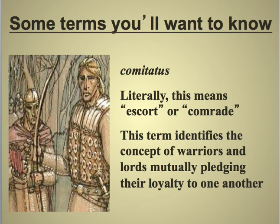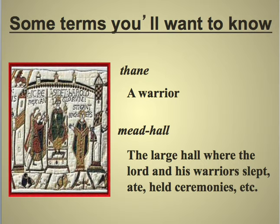Comitatus literally means escort or comrade. This term identifies the concept of warriors and lords mutually pledging their loyalty to one another — a bond for life, so to speak, among warriors. Thane is a warrior. A mead hall is a large dining hall — essentially the warriors' quarters, where they ate, slept, and held ceremonies.